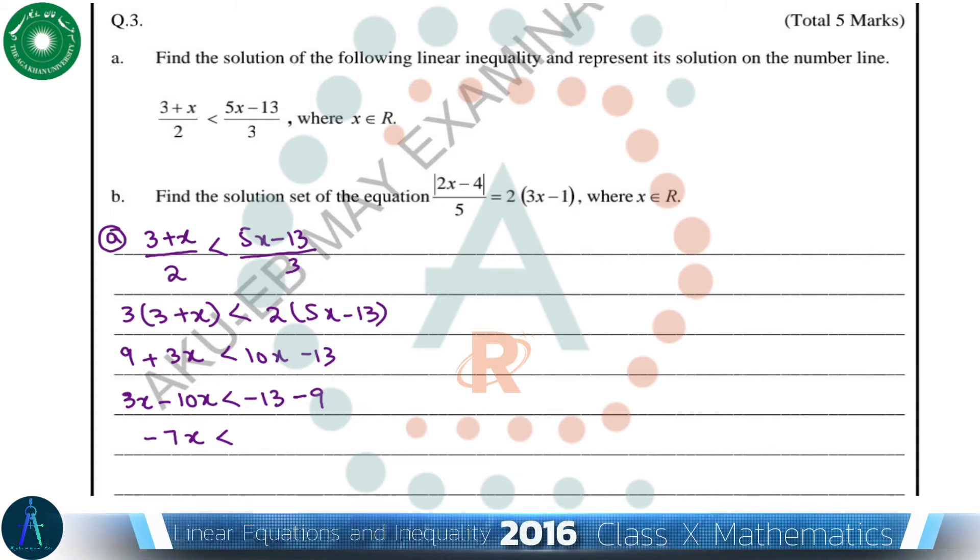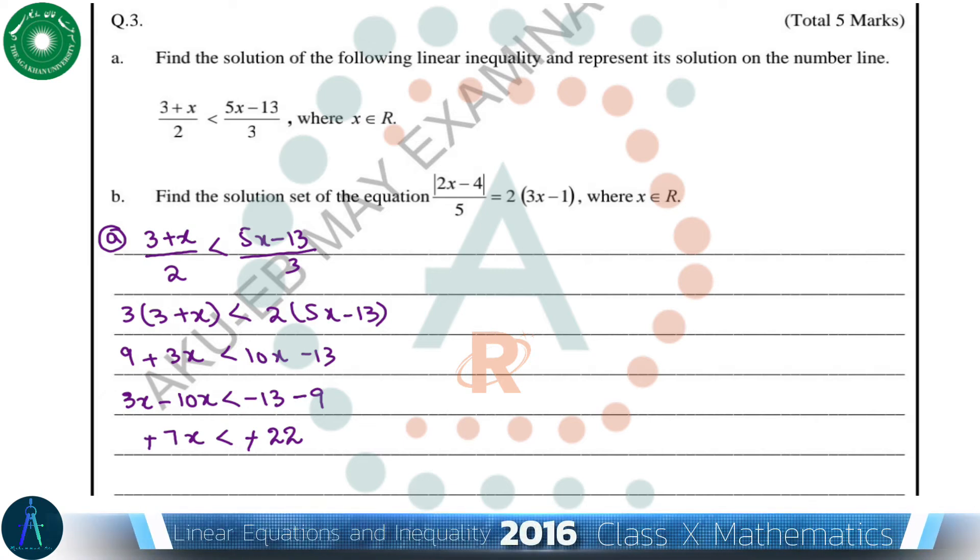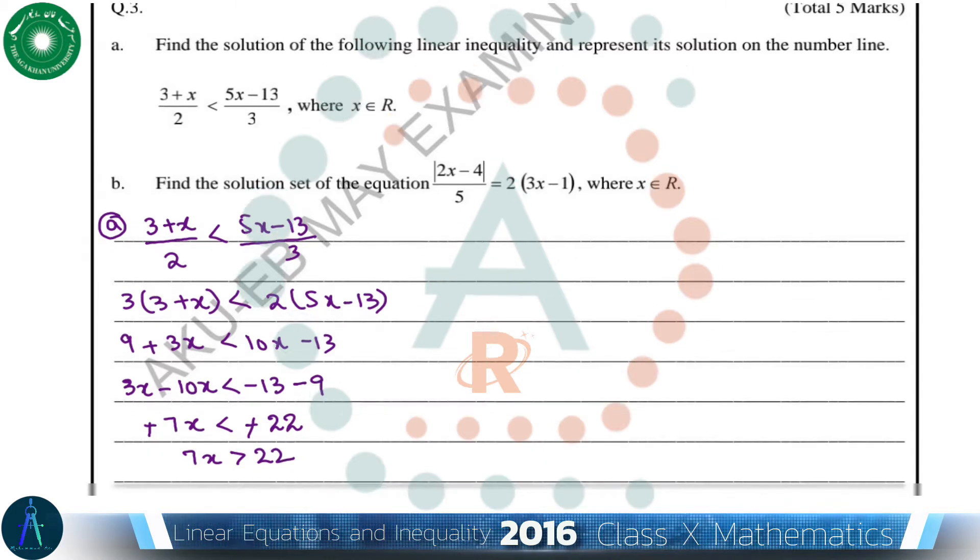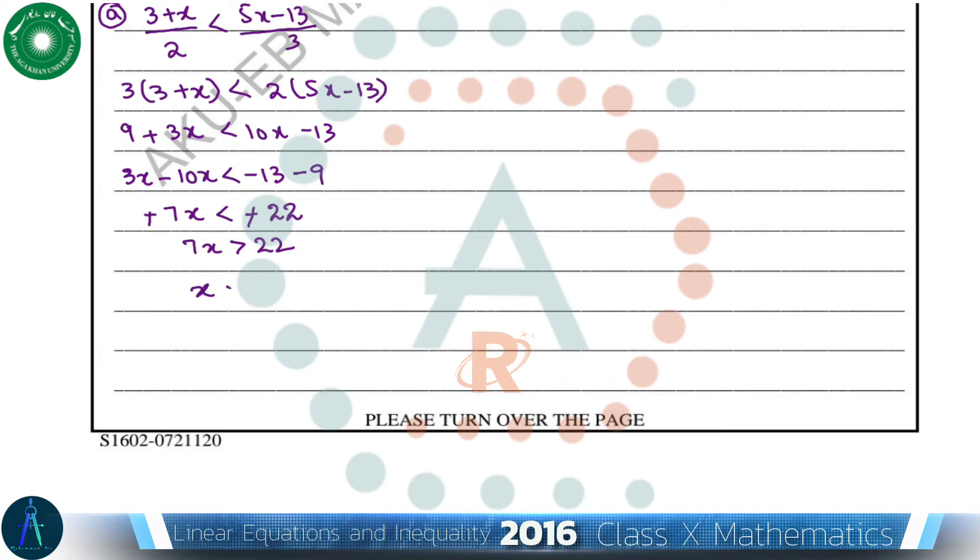So -26 and -9 is -35. The negatives will cancel out and the sign of inequality will be reversed, so 7x > 35. Further, dividing by 7 on the other side of the inequality, this shows that x is greater than 22 over 7.